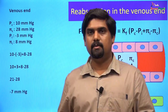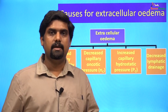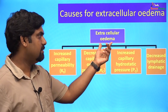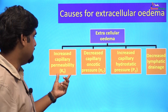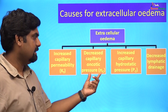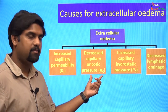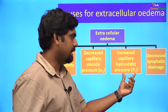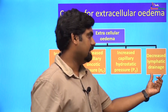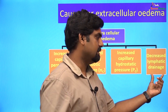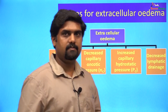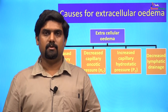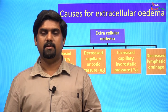Now let us discuss the causes for extracellular edema. Extracellular edema can be caused by an increase in capillary permeability, a decrease in capillary oncotic pressure, an increase in the capillary hydrostatic pressure, and decreased lymphatic drainage. Let us now discuss these various causes separately.